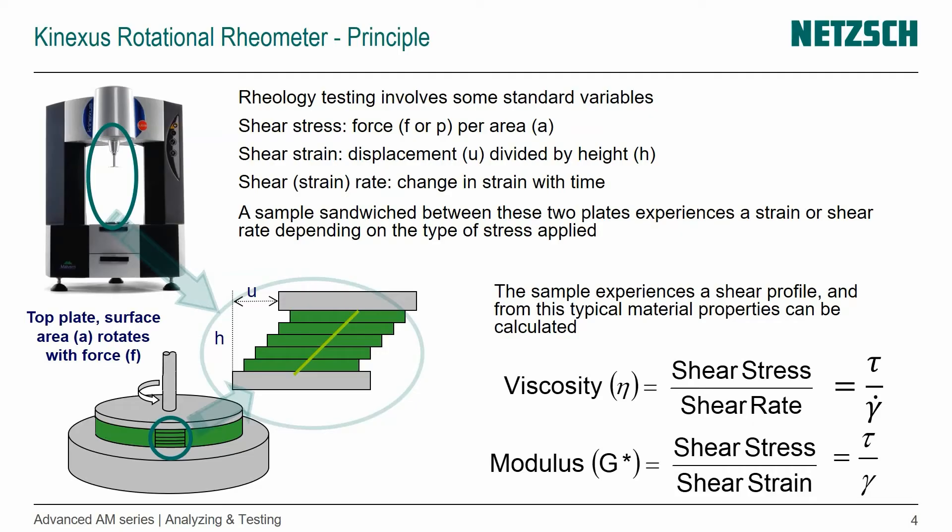The quantities that are important here are also the shear stress, so the force or pressure per area and the resulting shear strain, the displacement divided by the height. That is actually shown here. So the force would be, we have two plates, two parallel plates. We have our sample in between and we're displacing the upper plate by moving it.